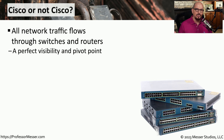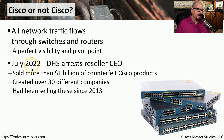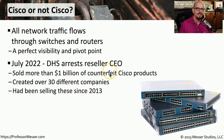If we look at our networking infrastructure, every bit of data in our organization passes through either a router or a switch — making it a perfect place for an attacker to gather information. This concern became very public in July of 2022, when the Department of Homeland Security arrested a reseller of Cisco products. This company had sold more than a billion dollars of Cisco products, except they weren't real Cisco products — they were counterfeit products with a Cisco logo on the front. The CEO had also created about 30 different companies to sell these counterfeits under different names.